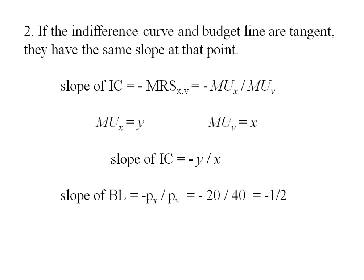The slope of my budget line is always the negative of px over py. So in this case that's the negative of 20 divided by 40 or a negative 1 half.